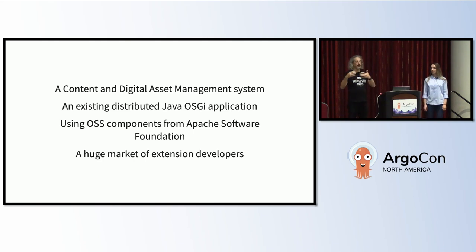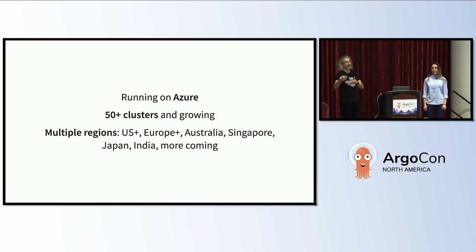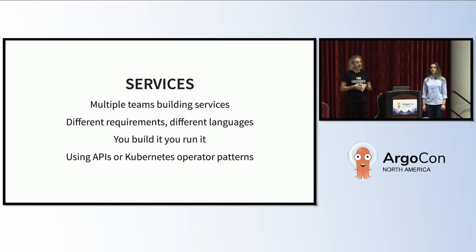This is important because we are running this code for customers. We are running on Azure. We have more than 50 clusters now and we keep growing. We run across multiple regions because customers providing content want their users to have content as close to them as possible. So we use pretty much every region we can get our hands on. We have multiple teams building services with different requirements, different languages. We try to encourage the philosophy of 'you build it, you run it,' and we make extensive use of APIs and the operator patterns in Kubernetes.